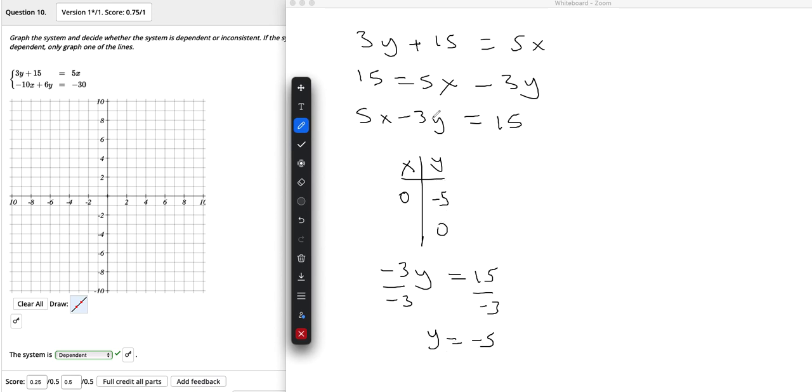And then I'll do the same thing with the y. I'm going to let this equal 0, which would be 5x equals 15. So 5 times what makes 15? That would be 3. And that gets me my two points so I can get my line drawn.